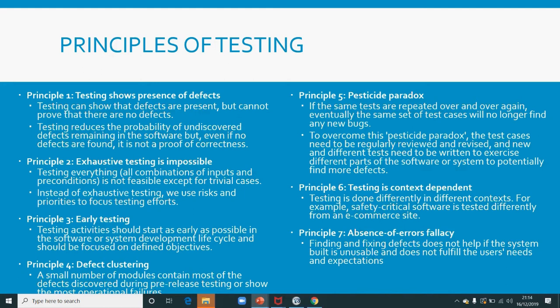So if the probability of defects was 100% before, maybe it's now been reduced so that you can say the probability of a bug in that particular software is now 1%, or 0.99%, or 0.11%. So that is principle number one.